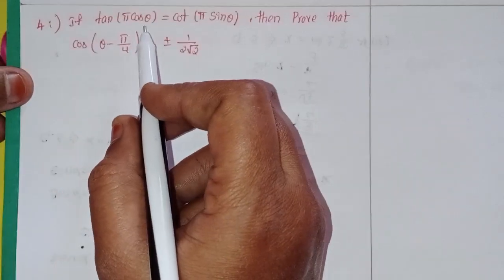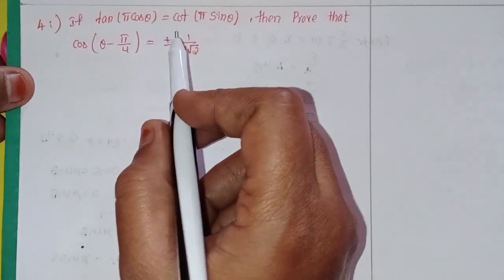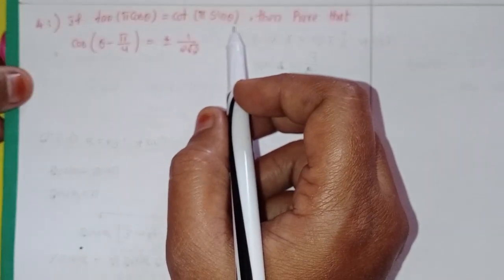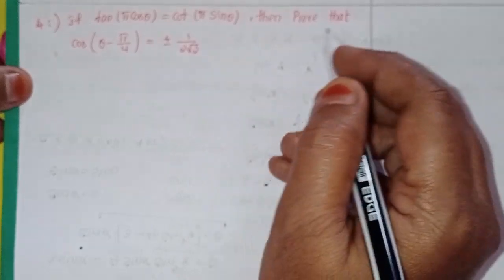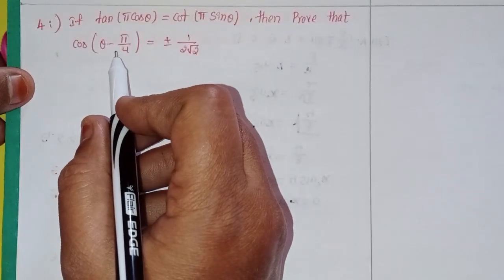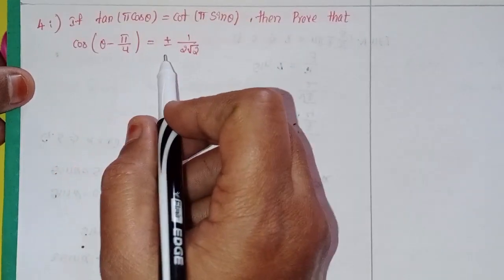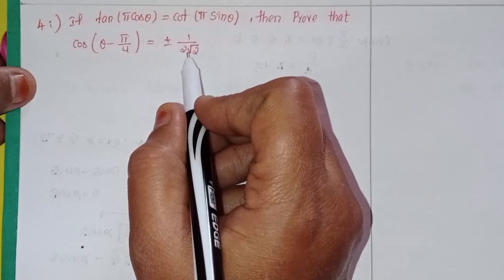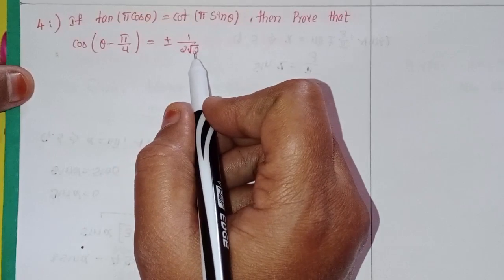If tan of π·cosθ is equal to cot of π·sinθ, then prove that cos(θ − π/4) is equal to plus or minus 1 by 2√2.